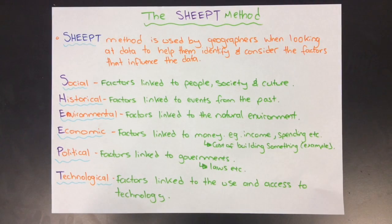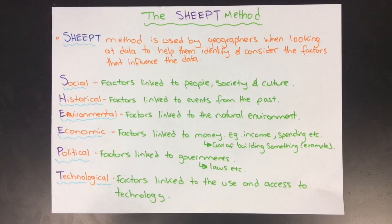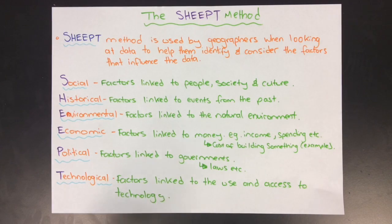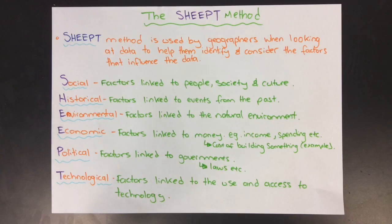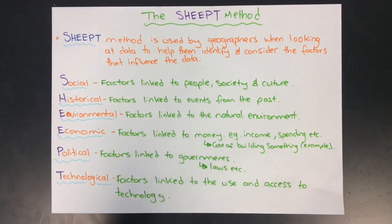The SHEPT Method is used by geographers when looking at data to help them identify and consider factors that would influence that data. The SHEPT Method is broken down into six different points, and each of the letters stands for a particular factor that geographers consider when they're looking at that data.